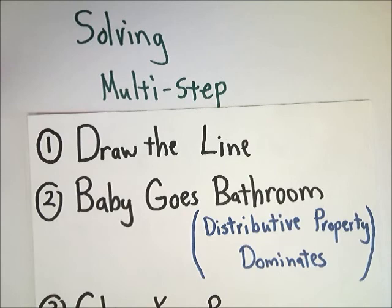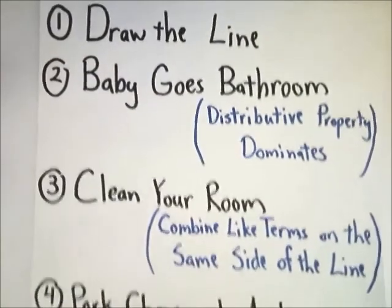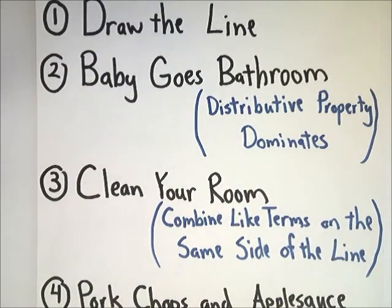The first step when we solve inequalities or equations is we want to draw a line. Draw the line down the equal sign. It separates them one side from the other. Makes everything easy. The next step is to, we'll call it, baby goes bathroom. Basically, it's just a reminder to do the distributive property before anything else, because the distributive property dominates. The next step is clean your room. You want to combine like terms on the same side of the line. So once you draw the line, it's easy to tell whether things are on the same side or not.